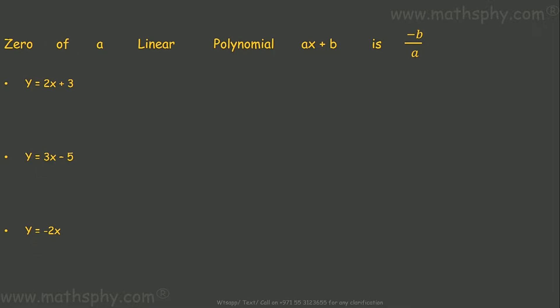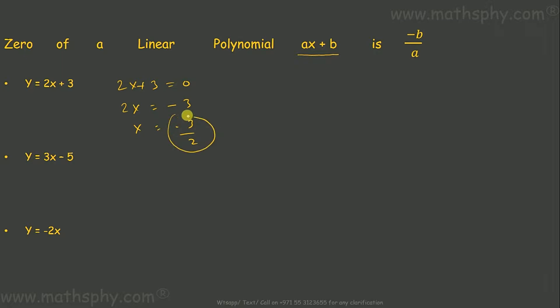We have a couple of linear polynomials. We already know that we can write a linear polynomial in the format of ax plus b. Now if I have to find out the zero of this polynomial, I'll take 2x plus 3 equal to zero, which gives me x is equal to minus 3 over 2. So minus 3 over 2 would be the zero of this polynomial.